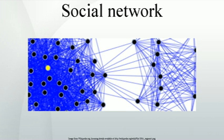The social network perspective provides a set of methods for analyzing the structure of whole social entities as well as a variety of theories explaining the patterns observed in these structures.